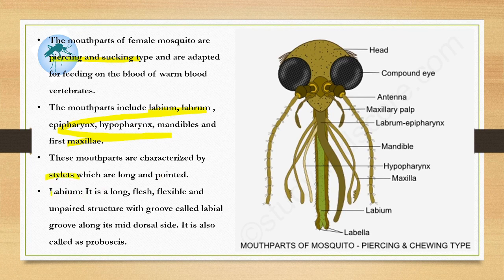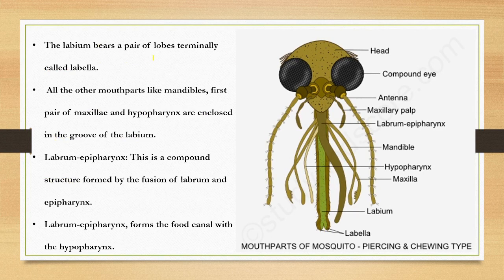The labium is a long, fleshy, flexible and unpaired structure with a groove called the labial groove. It is mid-dorsal and is also called the proboscis, and it has a structure called labella. All other mouthparts like mandibles, maxillary palps, and hypopharynx are enclosed in the groove of the labium.